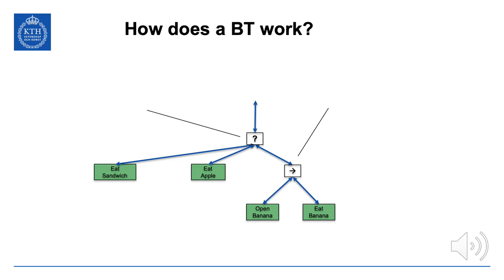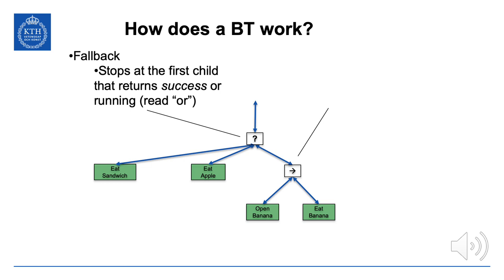In this example behavior tree we have four green boxes that are the actions: eat sandwich, eat apple, open banana, and eat banana. The two white boxes are the interior nodes: the fallback, indicated by a question mark, and the sequence, indicated by an arrow. The fallback stops at the first child that returns success or running, and continues to the next child if children fail. A fallback is something you do if what you tried first doesn't work.